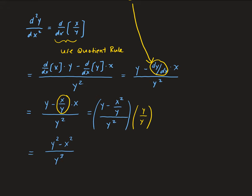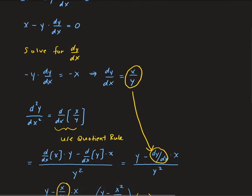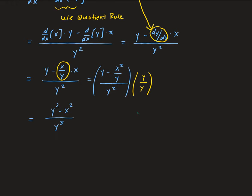Going back to our original function, we had x squared minus y squared equals 16. Multiplying through by negative one gives us y squared minus x squared equals negative 16. We can therefore replace the numerator y squared minus x squared with negative 16.